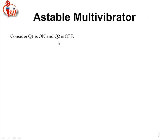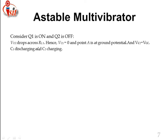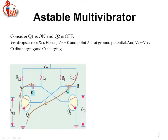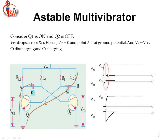For the astable multivibrator operation: consider transistor Q1 is ON and Q2 is OFF. Then VCC drops across RL1, hence VC1 is 0. Point A is at ground potential and VC2 equals VCC. C1 is discharging and C2 is charging. VC1 is increasing — the output voltage slowly charges while VCC slowly decreases. This is the time gap between VCC and VON. Then it drops across RL2, which slowly grows — a spike-like output is observed.